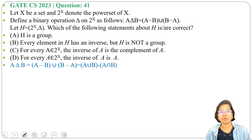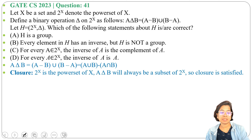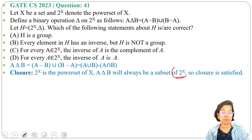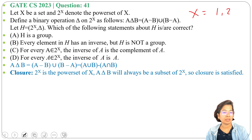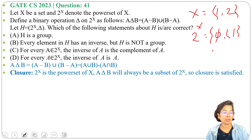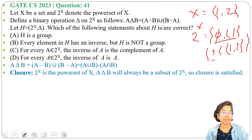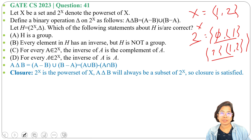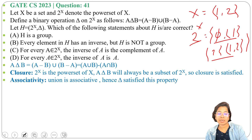All options are about group properties, so we will check all properties. First, closure: A delta B will always be a subset of 2^X, so closure is satisfied. Whatever sets A and B you take, the result will always be in 2^X. For example, if X contains {1, 2}, then 2^X will be the power set: {∅, {1}, {2}, {1,2}}. Any A delta B from these will remain in 2^X. Hence closure is satisfied.